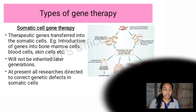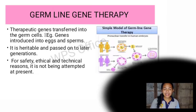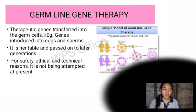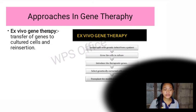The second type of gene therapy is germline gene therapy, where therapeutic genes are transferred into germ cells. Genes are introduced into eggs and sperm, making this heritable and passed on to later generations. For safety, ethical, and technical reasons, germline gene therapy is not being attempted at present.